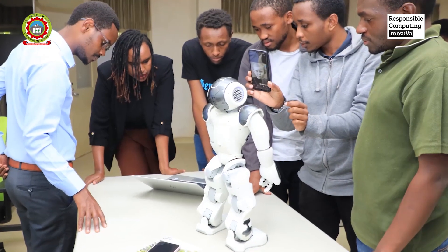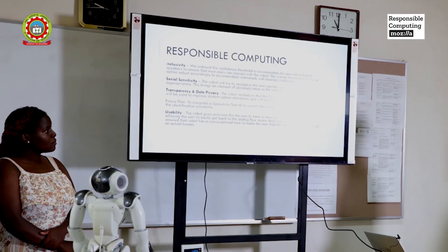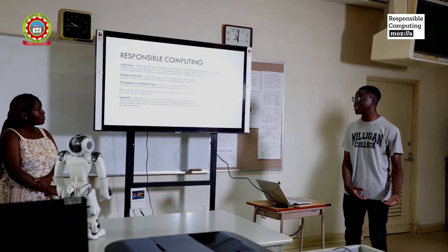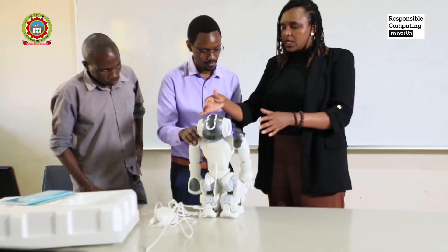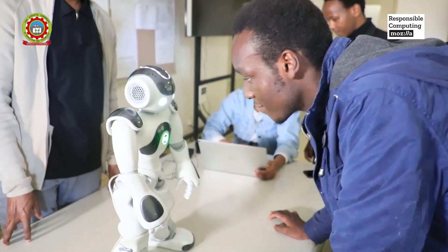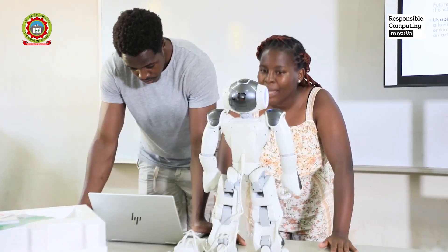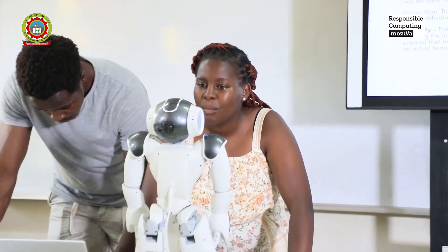The project that we are doing under the Mozilla Responsible Computing is about training computer science and computer technology students on responsible computing and ethics. The approach that we are taking is integrating ethical considerations into the human-computer interaction course, training students on human-centered design and responsible computing, and then having them apply that knowledge and awareness into designing robotic applications.